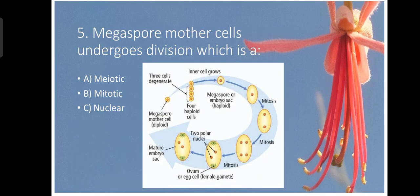Question number five. Megaspore mother cells undergo division which is a meiotic. Megaspore mother cells divide once by meiosis then they divide by mitosis.